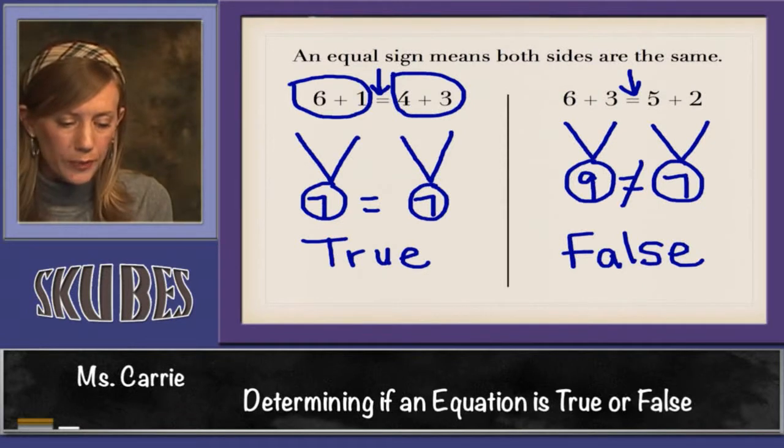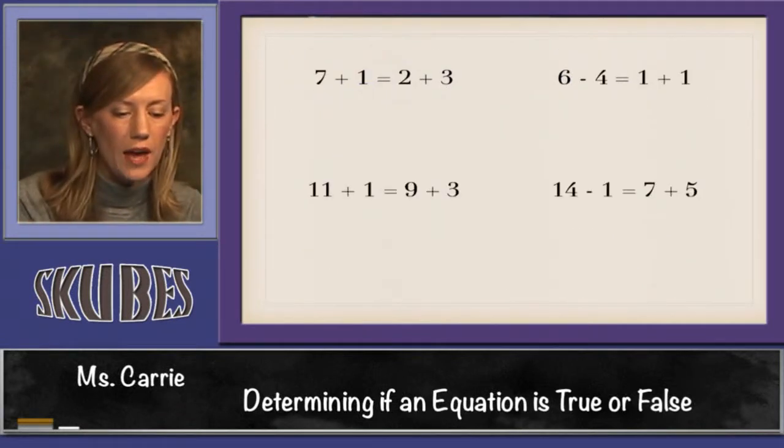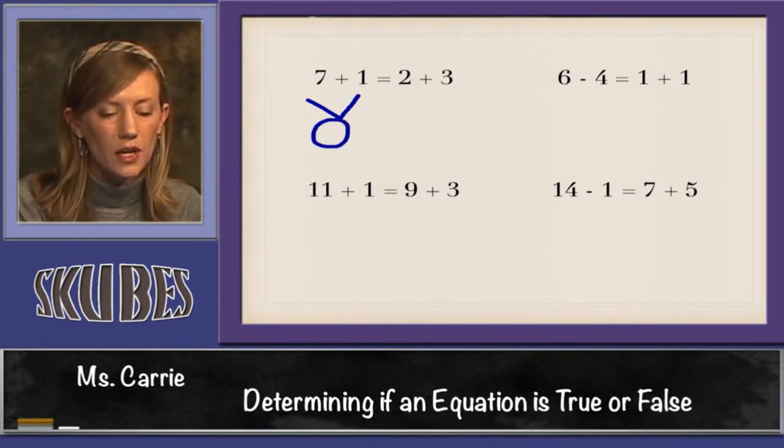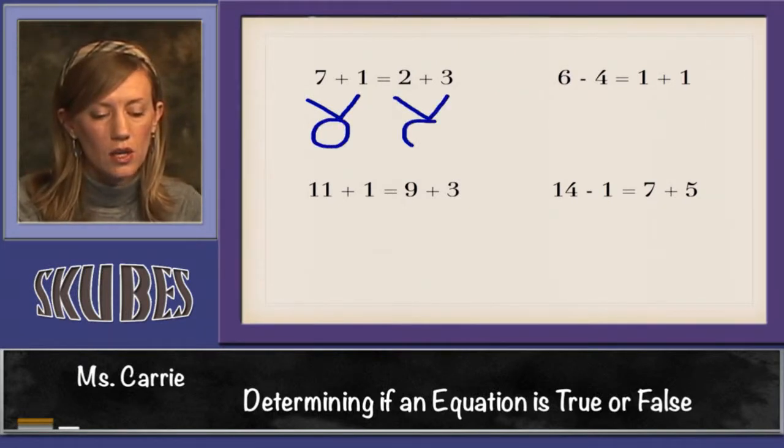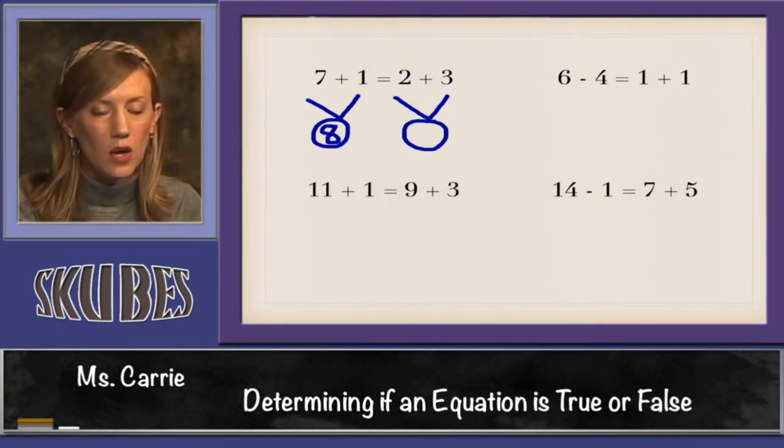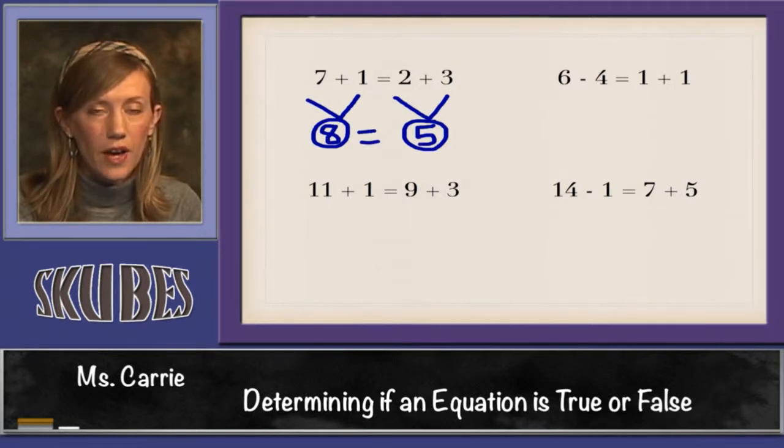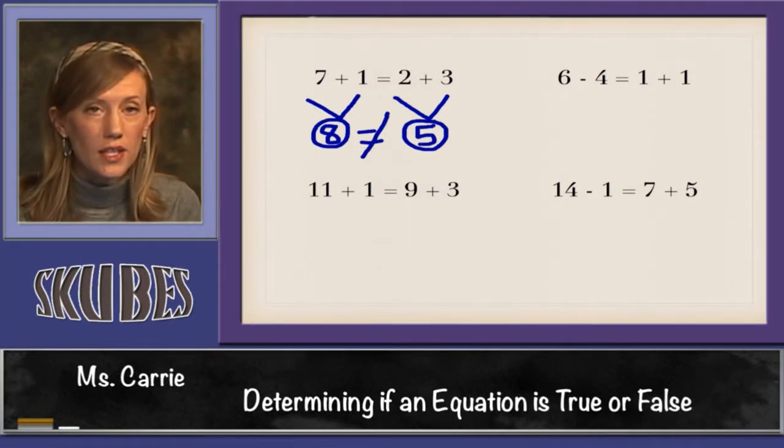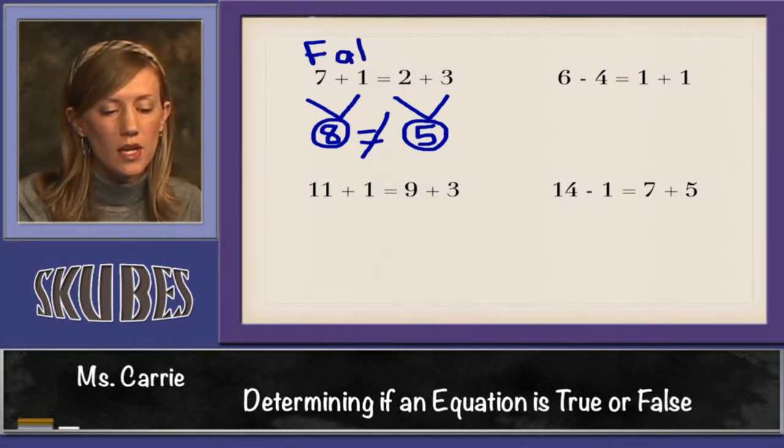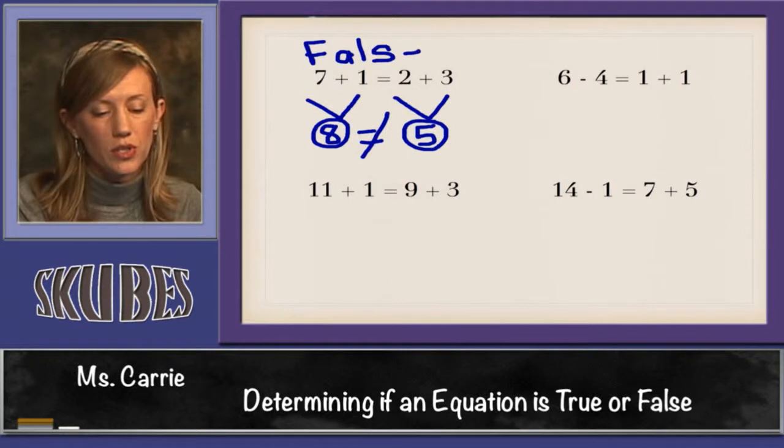Let's look at a couple more. Over here we have 7 plus 1 and over here we have 2 plus 3. Well we know that 7 plus 1 is 8 and we know that 2 plus 3 is 5. Is 8 equal to 5? No it isn't. They're not the same number. So this would be false. 7 plus 1 is not equal to 2 plus 3.